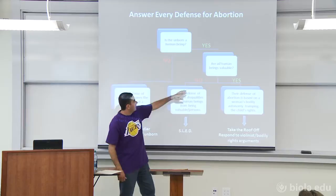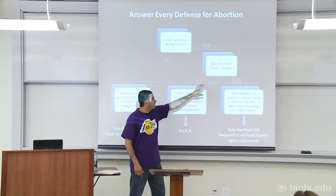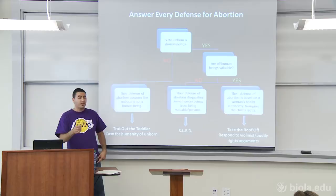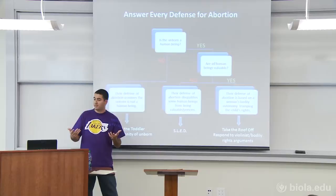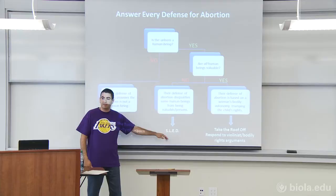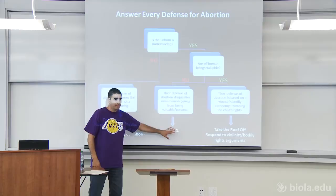The question becomes: are all human beings valuable? She was saying no. What she was doing, in essence, was saying there are certain qualities or characteristics — which I would argue are arbitrary — that she believes disqualify a certain class of human beings from being valuable or from being a person. That's where the SLED test comes in, because all the qualities or characteristics she offered fell under one of these four categories: size, level of development, environment, degree of dependency. I was able to respond with a SLED test type of response.